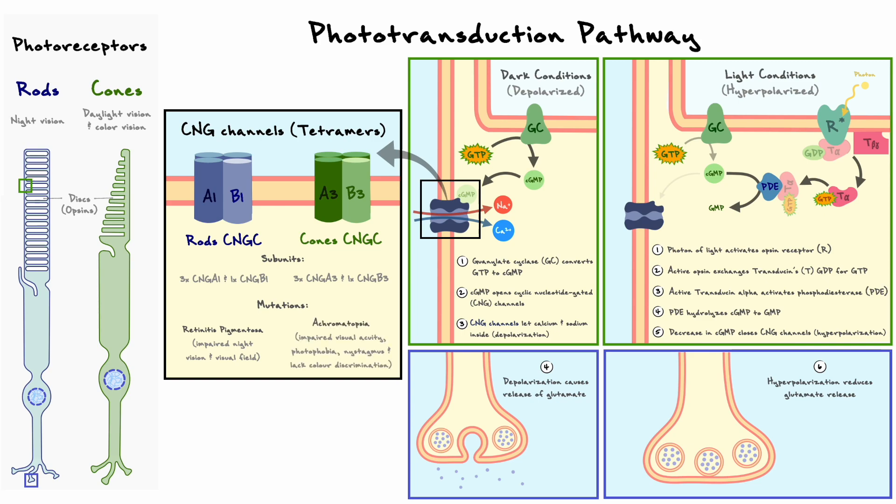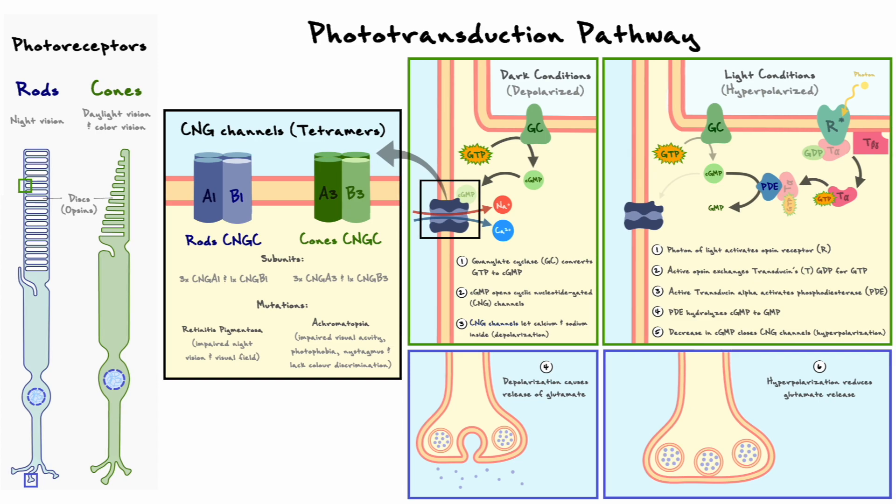Mutations in cones CNG channels in either CNGA3 or CNGB3 subunits lead to an achromatopsia phenotype that is characterized by poor visual acuity, a lack of color discrimination, photophobia, which is eye discomfort in bright light, or nystagmus, which are uncontrolled eye movements.